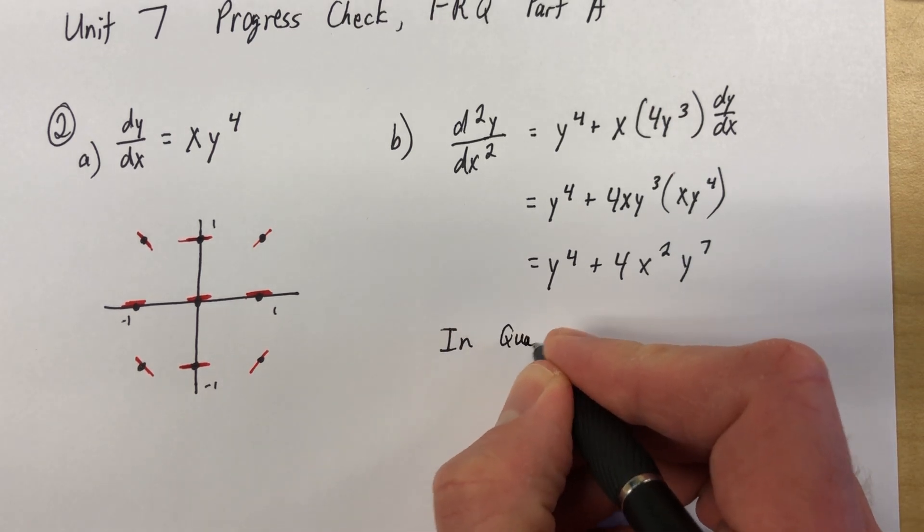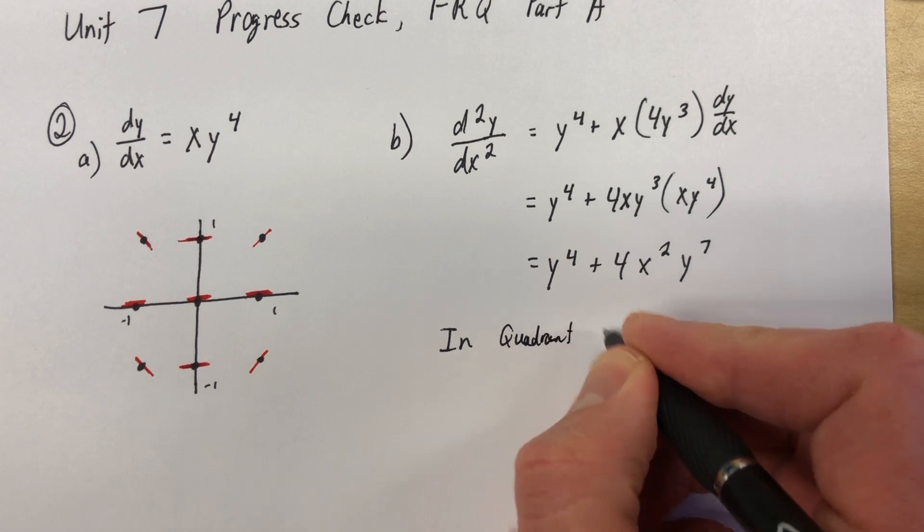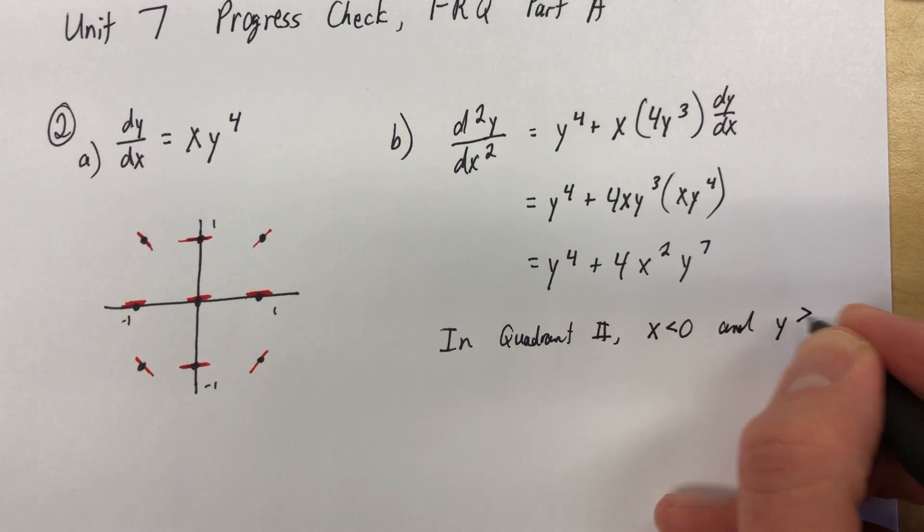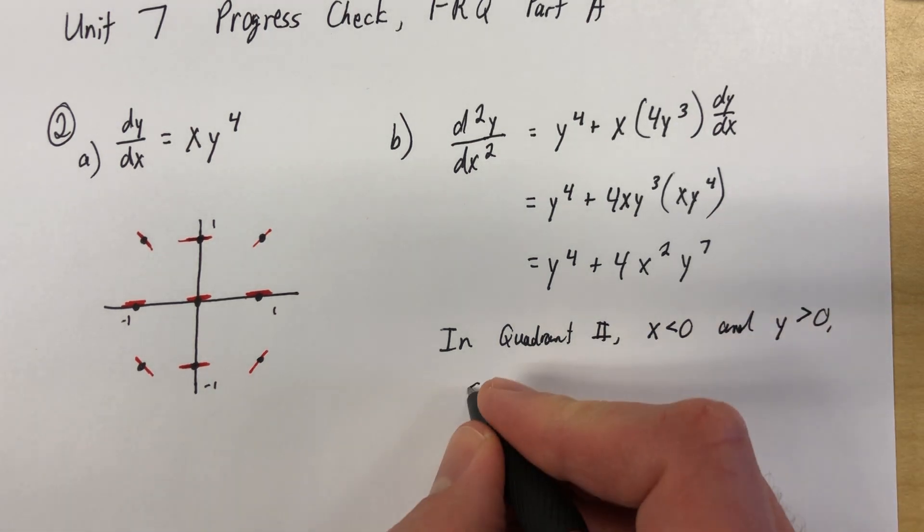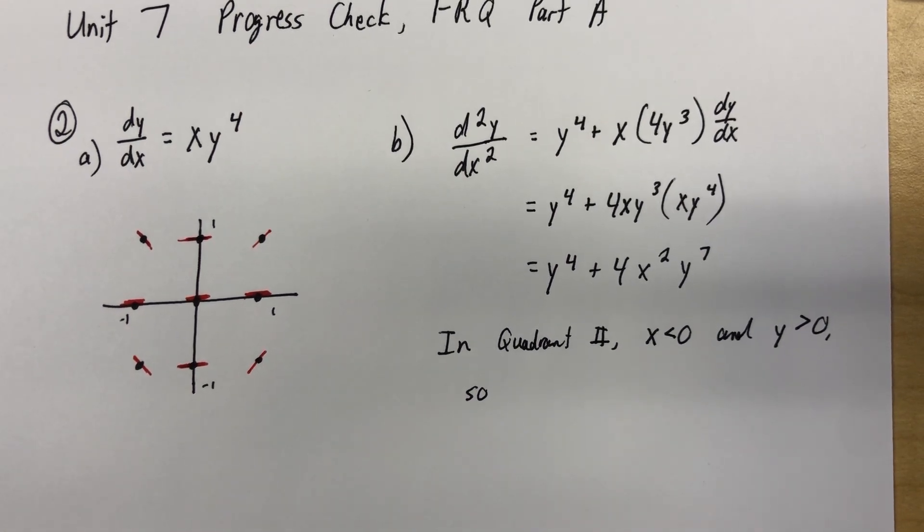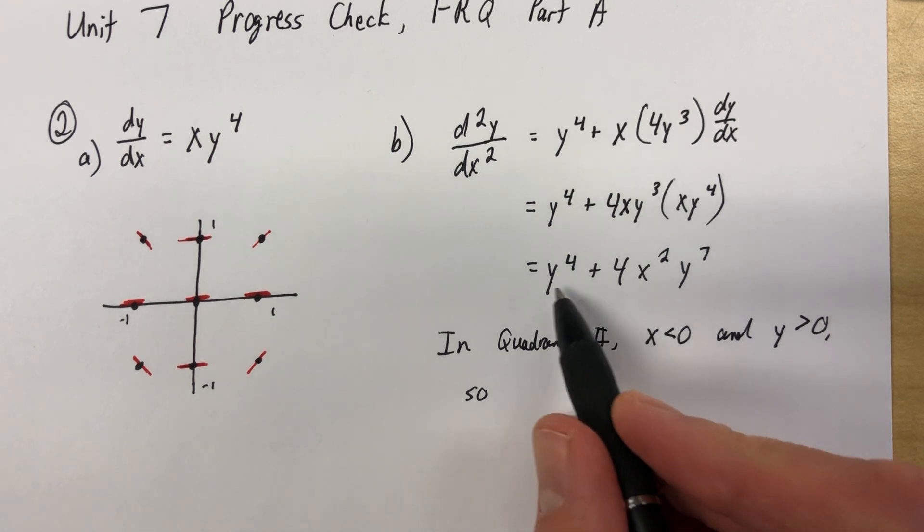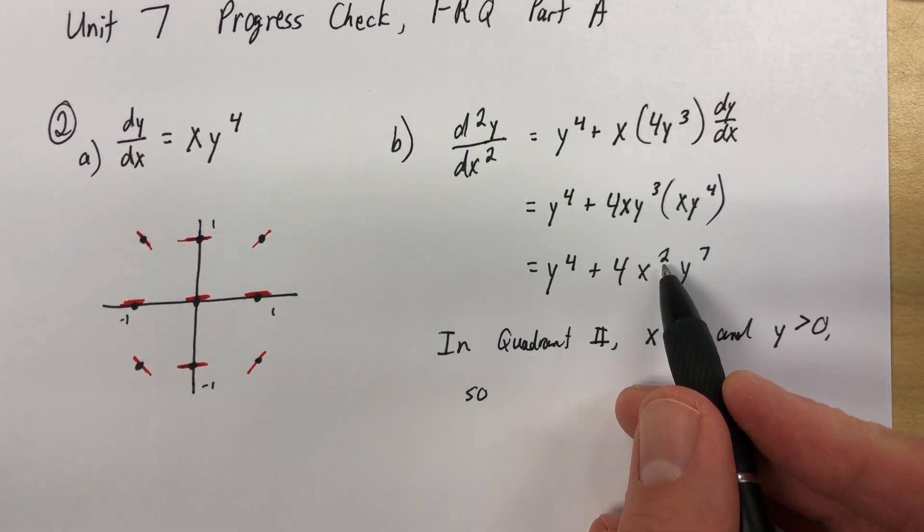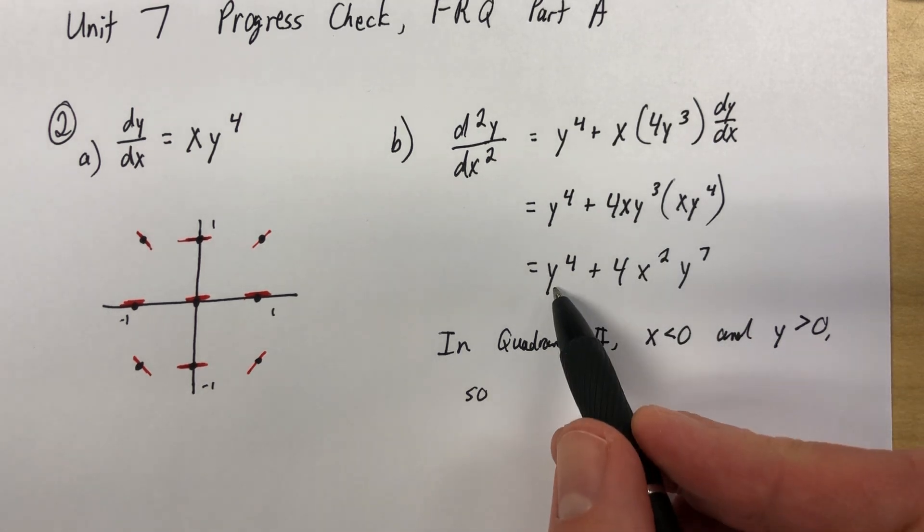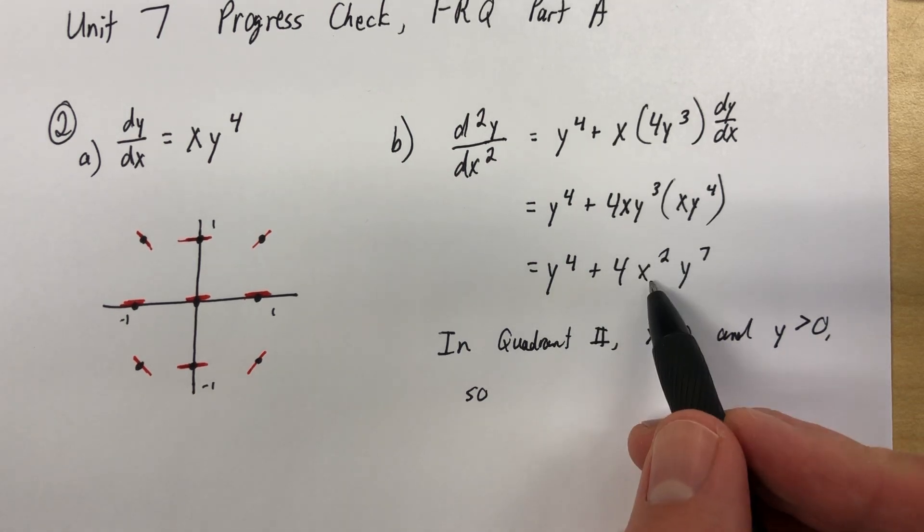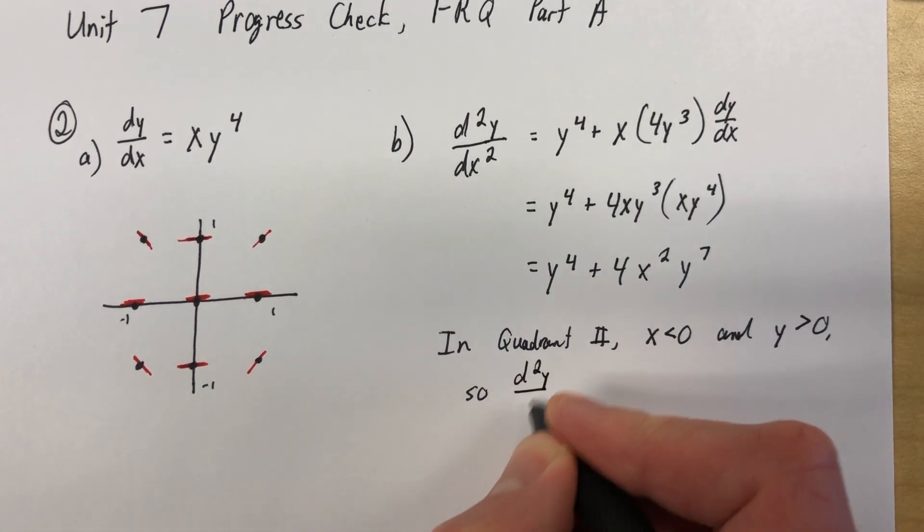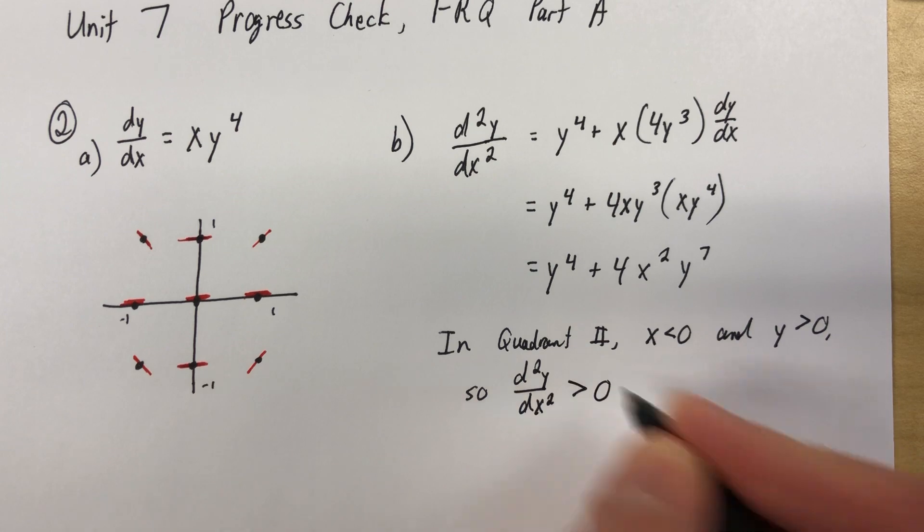Let's put this into words. So, in quadrant 2, x is negative and y is positive. Let's start thinking about what's about to happen next. If I plug in negative x values, I'll plug in a negative there and I square it. So I have a positive so far. And then I plug in positive y values. So I have positive plus positive 4 times positive times positive. We got nothing but positive here. So the second derivative is always positive in this quadrant.